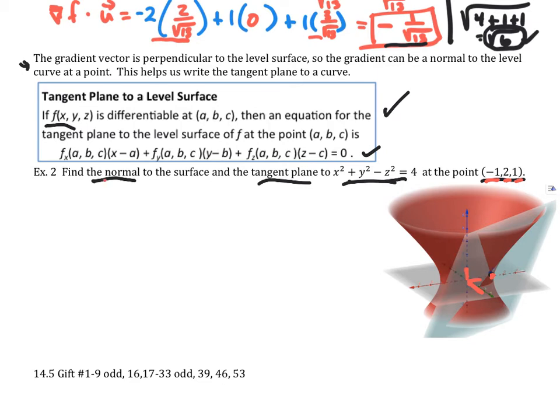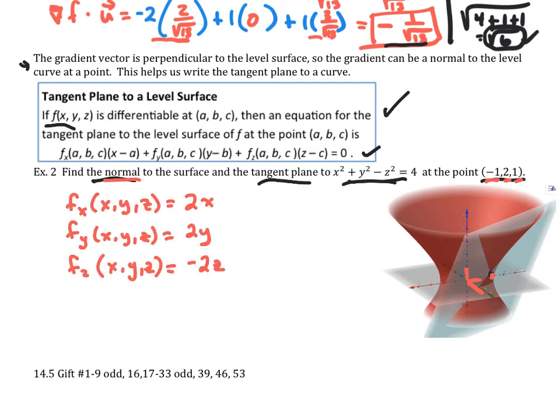So let's go ahead and find the gradient because the gradient will give us the normal so we have to find all of our partials. Go ahead and do that. So here's all my partials that was pretty easy now I want to evaluate them at the point (-1, 2, 1).